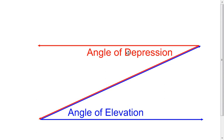In the angle of elevation, one side is horizontal and the other side is going to go upward — it's going to elevate. That's how they get their name: angle of elevation and angle of depression.